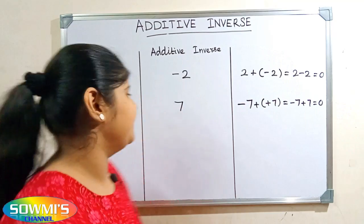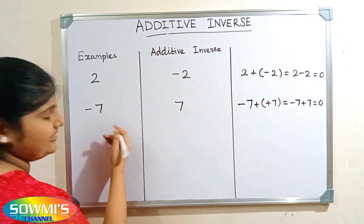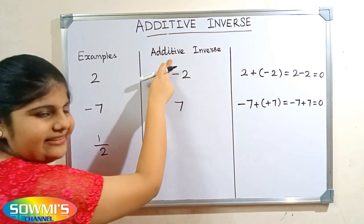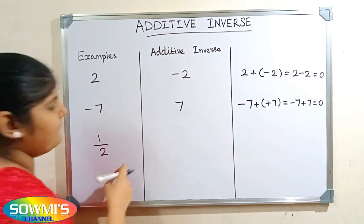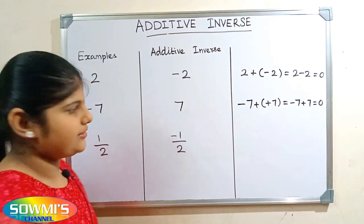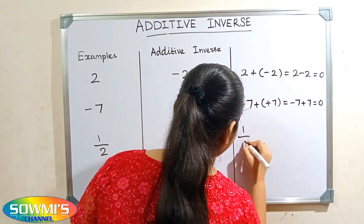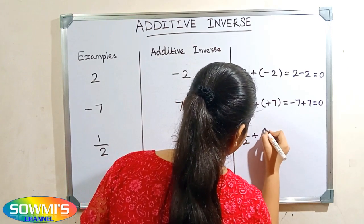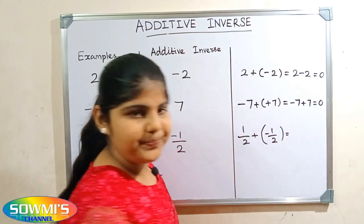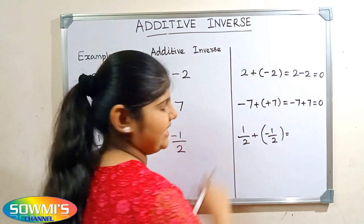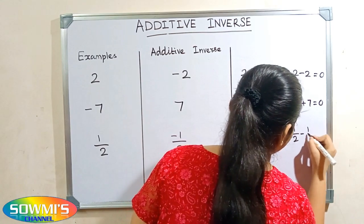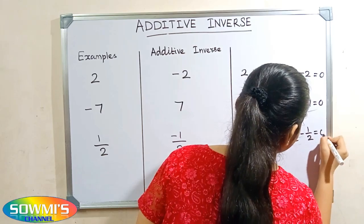Next we will take an example in fractional numbers. We will take one by two. The additive inverse of one by two is minus one by two. According to the property, one by two plus minus one by two — plus into minus will be minus — so one by two minus one by two is equal to zero.